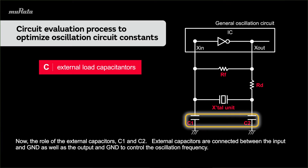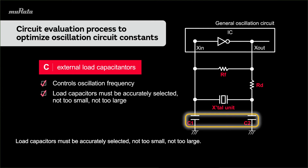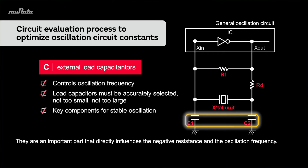Now, the role of the external capacitors C1 and C2. External capacitors are connected between the input and ground as well as the output and ground to control the oscillation frequency. Some ICs have internal load capacitors that can be adjusted through programming. Load capacitors must be accurately selected — not too small, not too large. They are an important part that directly influences the negative resistance and the oscillation frequency.